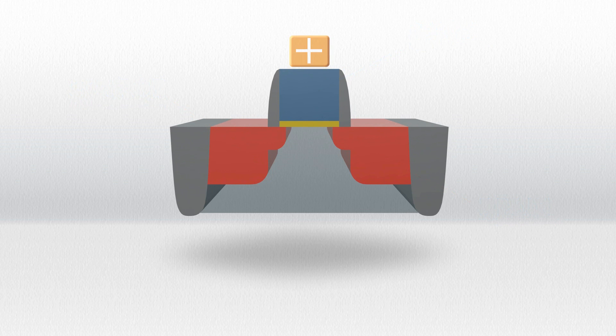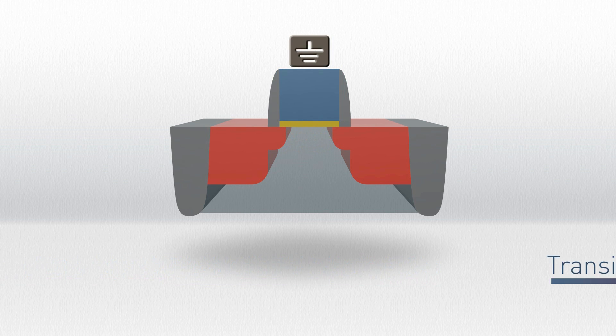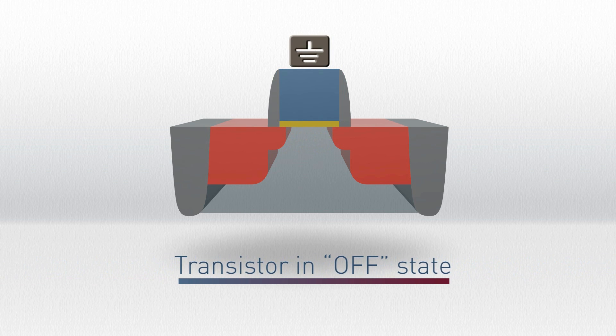The gate controls the flow of electrons between the source and the drain. When voltage is applied to the gate, a conductive channel is formed and electrons flow. When voltage is removed, the flow is turned off. The transistor thus acts as a switch.